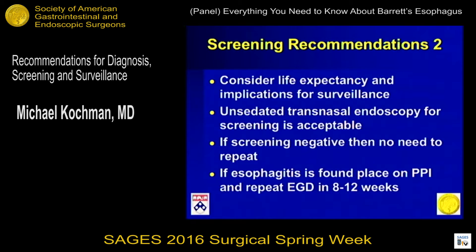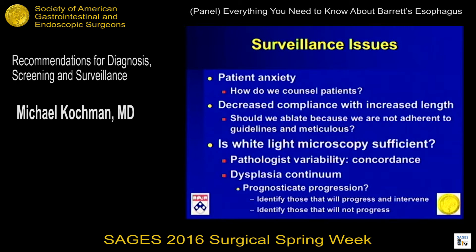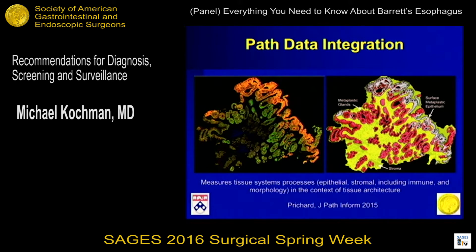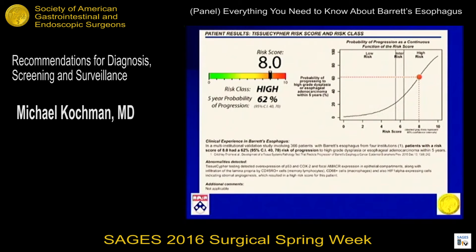Moving on to surveillance — do not biopsy esophagitis. Quickly going through surveillance and patient anxiety as reasons for it: we have to look at compliance, both physician and patient compliance. Physicians do start to become lazy with longer segments of Barrett's and longer duration of screening. Patients also become complacent about returning for endoscopy when they haven't had bad news. A paper from Greenwald really brings up the issue of pathology: you can have low-grade that's nearly no-grade, or low-grade that's nearly high-grade in actual pathologic behavior — a huge problem. Cernostics has a way of looking at path data integration, but for large population screening it's not necessarily the way to go right now; it gives you a propensity score.